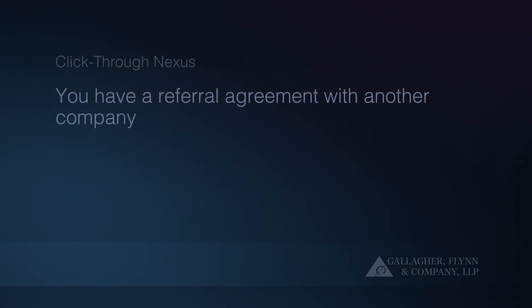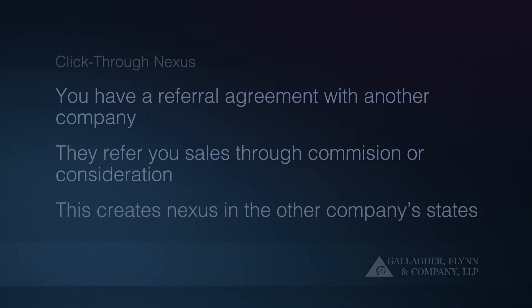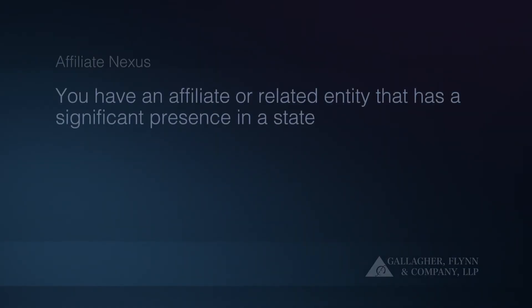There are a few other ways that internet sales can create nexus. Click-through nexus is a little complicated, but what this means is if you have a referral agreement with another company and they refer you sales for some sort of commission or consideration, this can create nexus in the other company's state. Usually how this is done is by a web link on one of the company's websites that links to the other company's website. Affiliate nexus is when you have an affiliate or related entity in a state that has a significant enough presence to give you nexus.